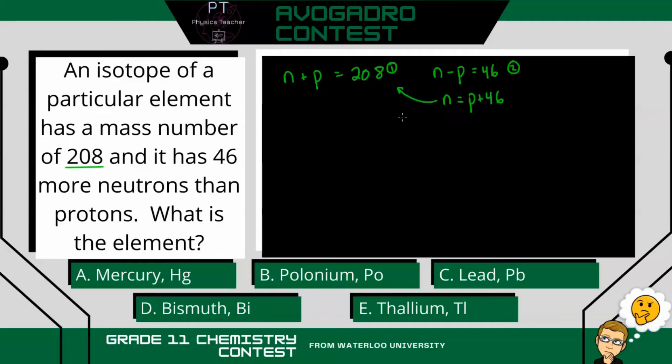Then I'm left with just one equation with one unknown, the number of protons. So if I replace n here with p plus 46, and then I have this plus p, that's going to equal 208.